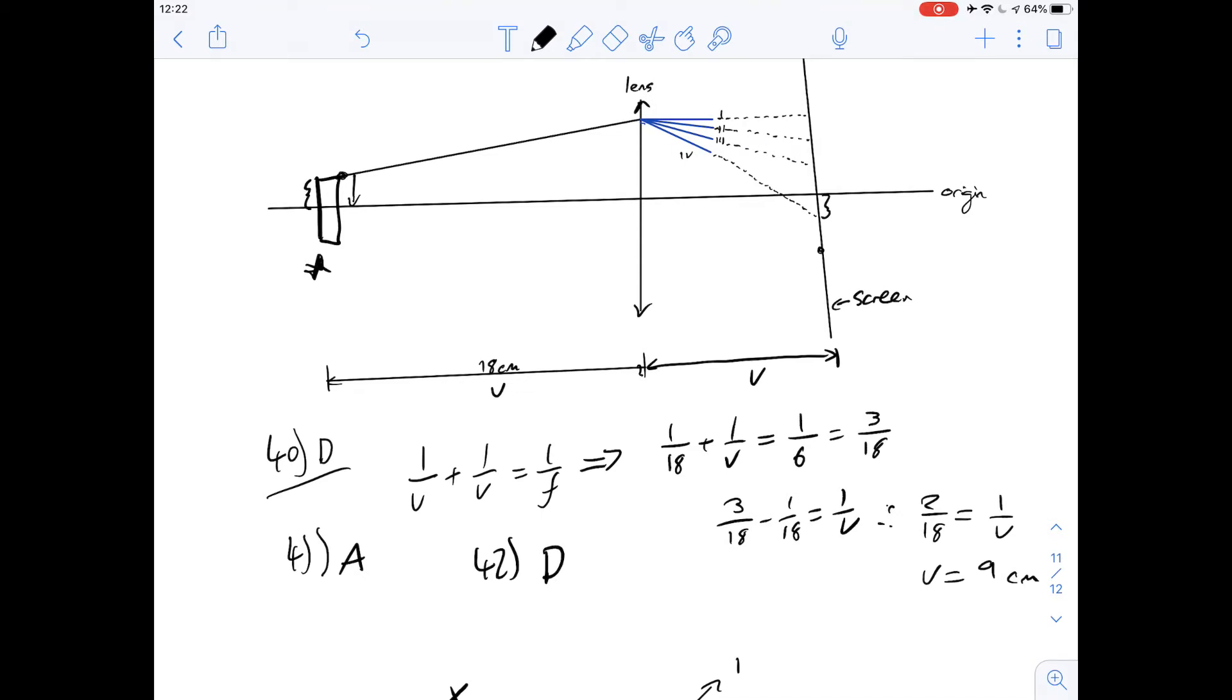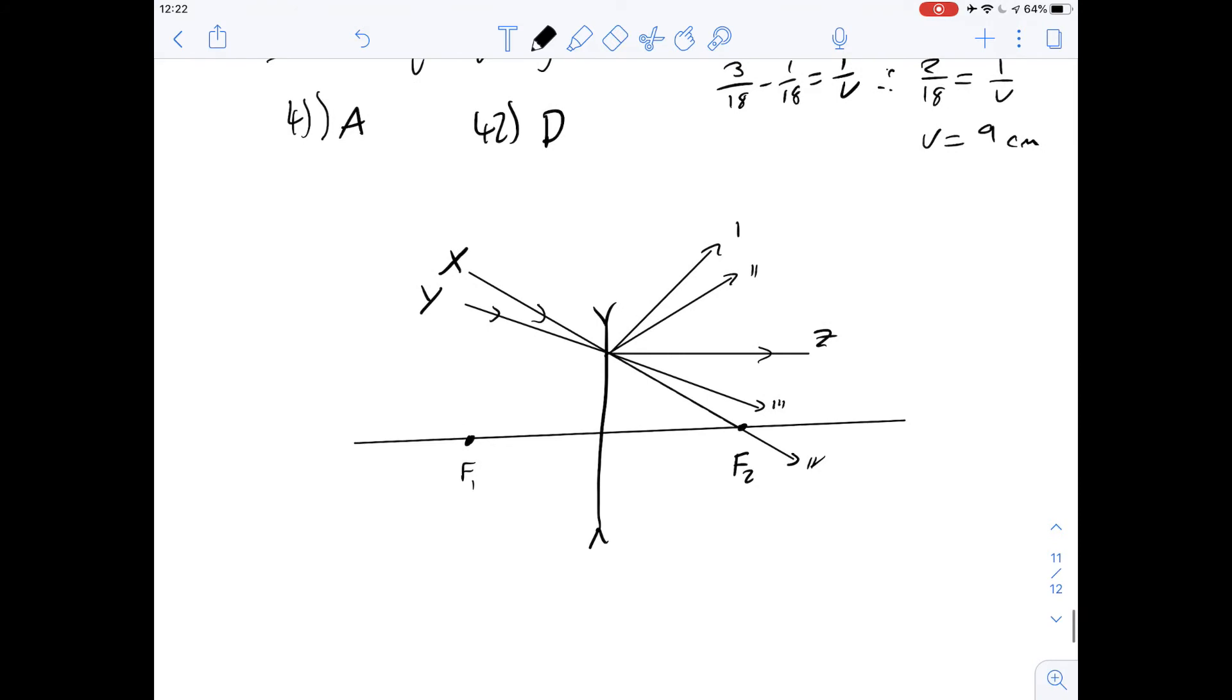And then we've got question 43 we've been given a fairly confusing diagram about a diverging lens and it asks in which direction will ray y emerge from the lens. Okay so I think it's important to just quickly go over how a diverging lens works and how you can decide in which direction the ray of light might emerge.